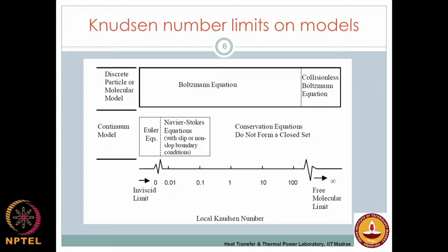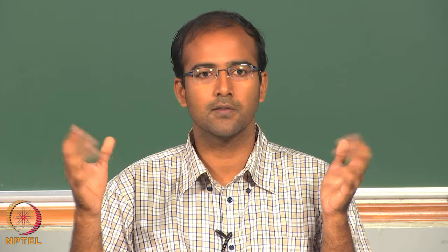Another plot uses a different parameter: the Knudsen number. The Knudsen number is a non-dimensional parameter defined as the ratio of the mean free path to the characteristic length scale. The mean free path is the approximate distance that energy carriers travel before they collide with each other. A very high Knudsen number indicates either a very large mean free path between energy carriers or a very small characteristic length scale.